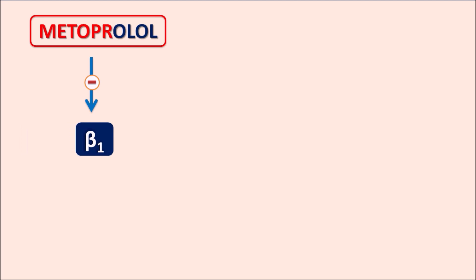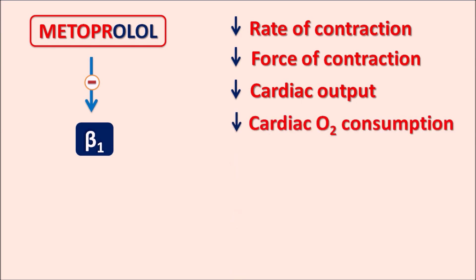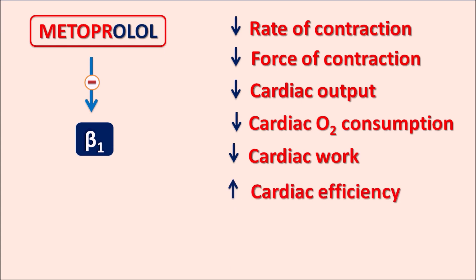Metoprolol is a selective beta blocker that blocks beta-1 receptors present on the heart. By blocking these receptors, metoprolol decreases the rate of contraction of the heart and the force of contraction. When both rate and force of contraction are reduced, cardiac output is also reduced. This leads to reduced cardiac oxygen consumption, reduced cardiac work, and therefore increased cardiac efficiency. This drug also reduces afterload by reducing cardiac output and slightly reduces preload.